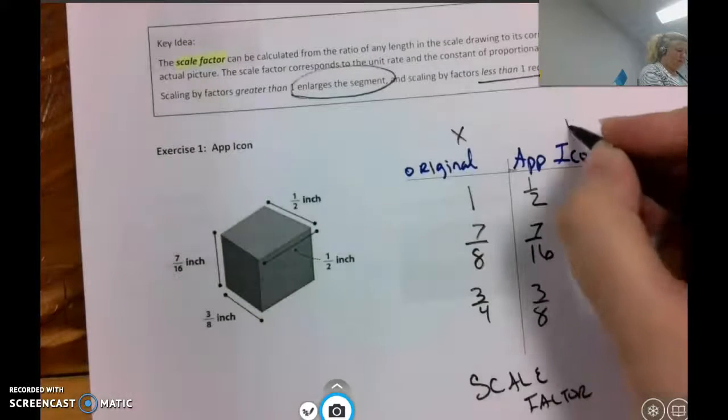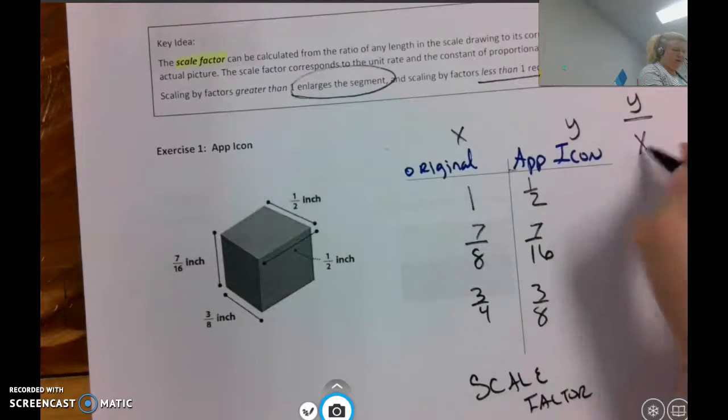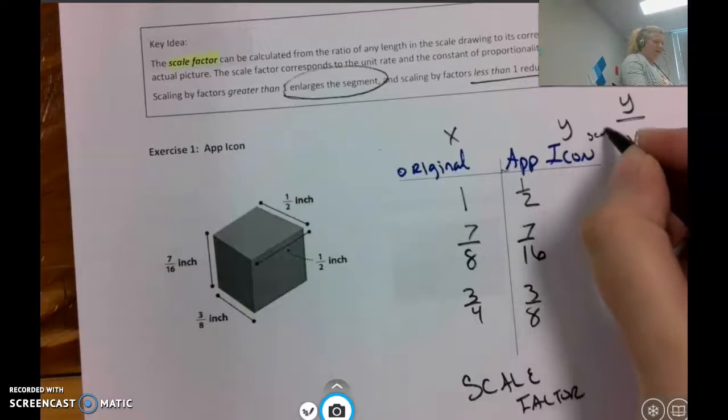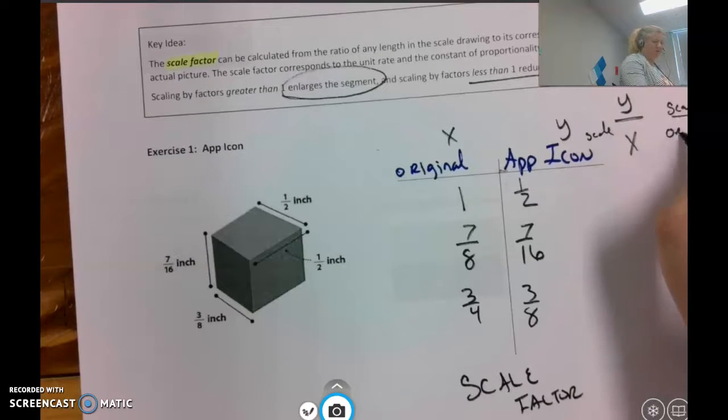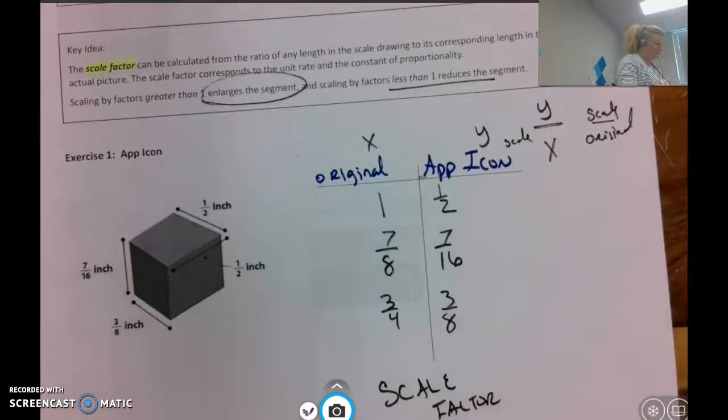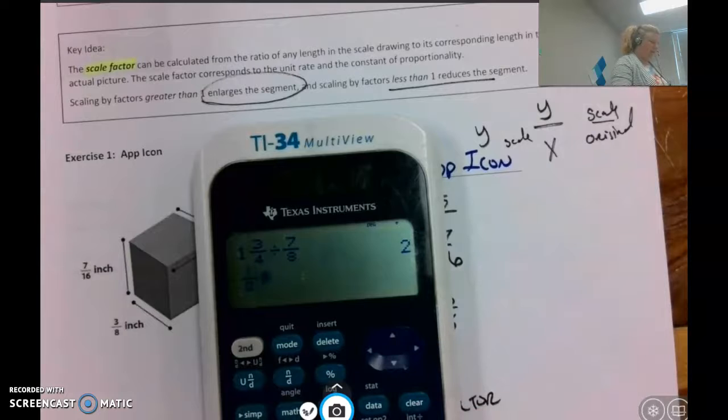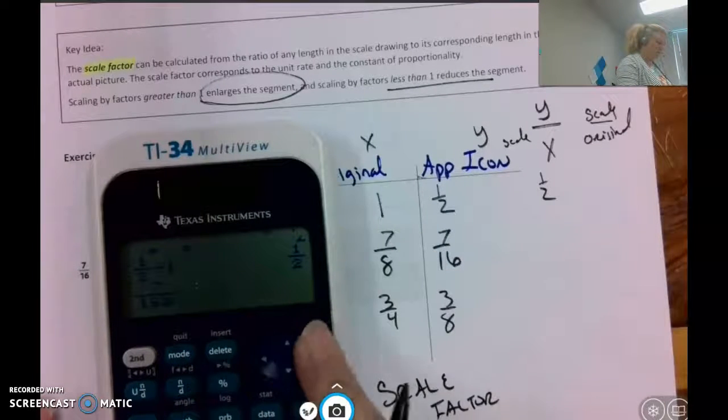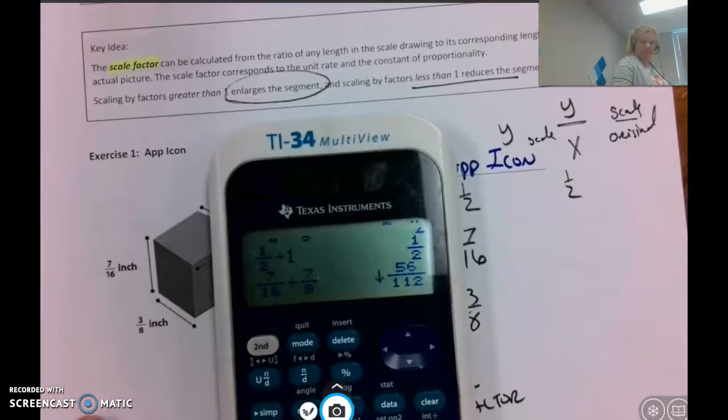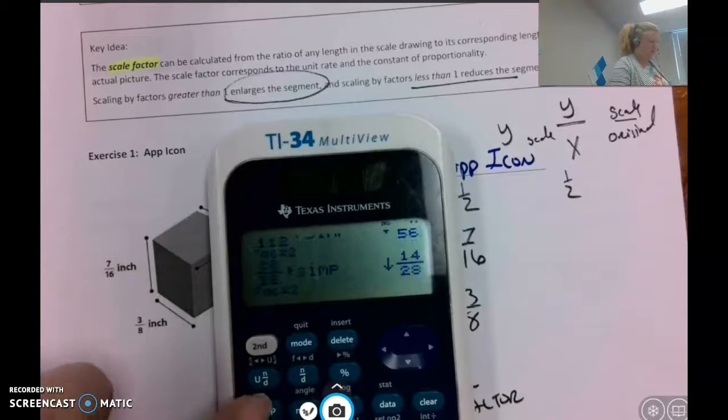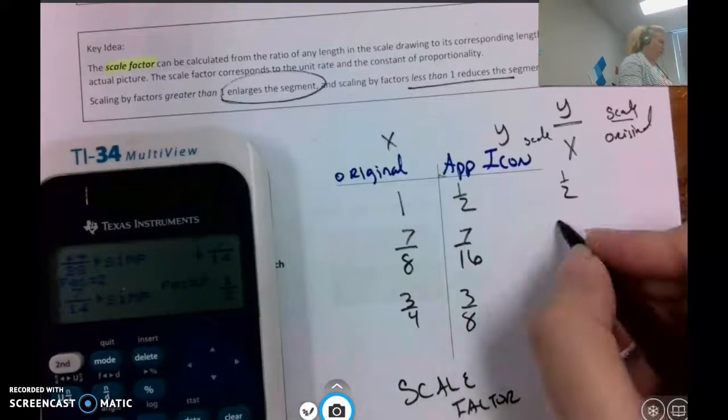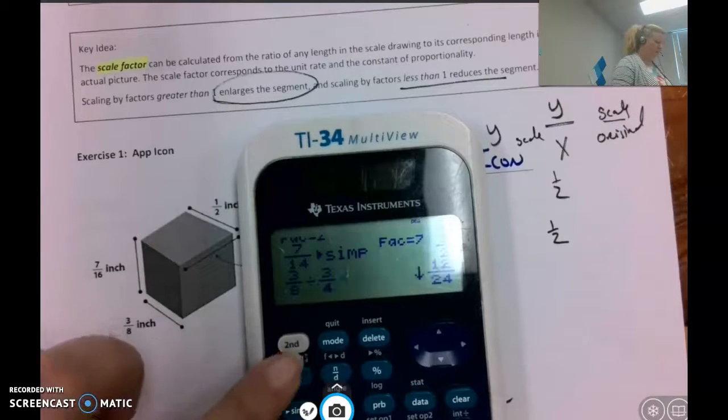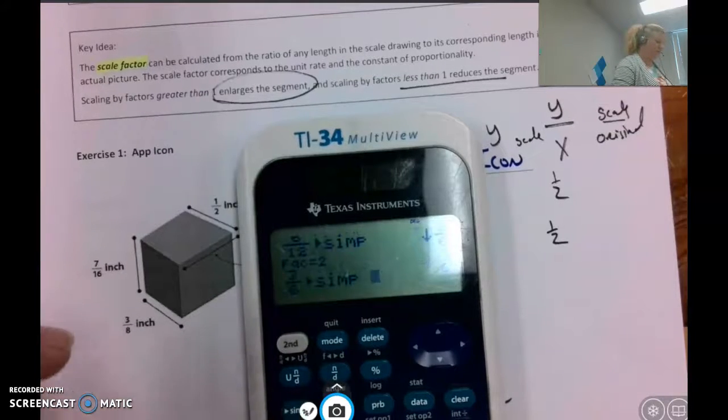We're going to get that by doing the app icon divided by the original lengths of these segments. We could also think of this as the scale and the original, or the new and the original, to get our scale factor. I'm going to do 1 half divided by 1. I am going to do this on the calculator just to kind of prove it. 7 sixteenths divided by 7 eighths. This arrow here means to simplify on this particular calculator. It's going to continue to simplify until that's no longer there, and that's also 1 half. 3 eighths divided by 3 fourths, and again, simplify until that is no longer an option, and we get 1 half.